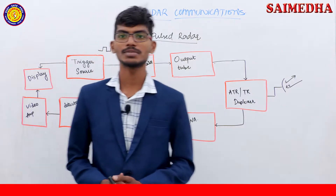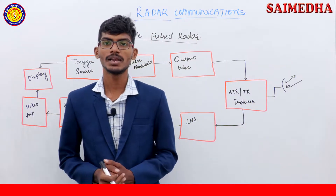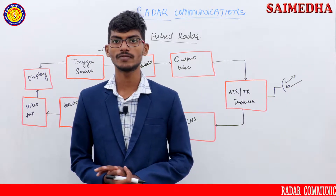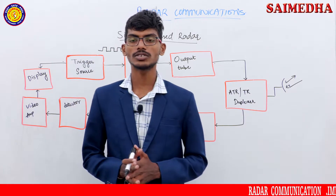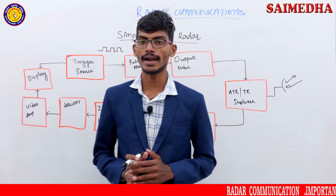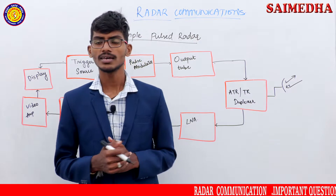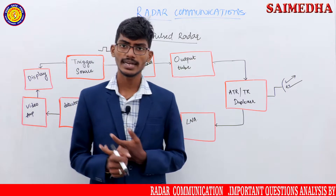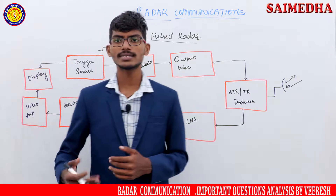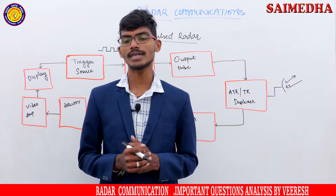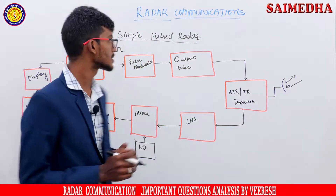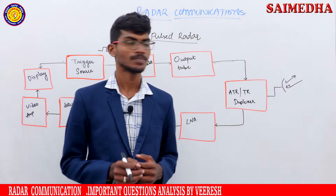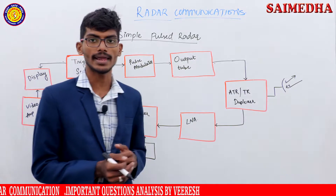Hello everyone. Here comes our next topic, that is simple pulsed radar. In the last class we studied about basic radar and the basic block diagram of the radar. So we are now going to study about simple pulsed radar. Radars are classified in many ways: simple pulsed radar, FM CW radar, CW radar, and MTI radar. We will discuss them later. Now we are going to start our first topic, that is simple pulsed radar. This is the basic radar among all the classifications of radars.